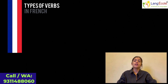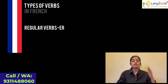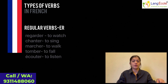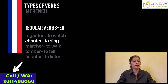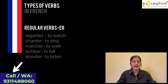Let's now have a look at the first group. The first group includes regular verbs that end with -er in their infinitive form. The infinitive form means to watch, to dance, etc. This group includes most verbs. Here are a few examples of ER verbs: regarder – to watch, chanter – to sing, marcher – to walk, tomber – to fall, écouter – to listen. All these are ER regular verbs, so they will follow the same pattern of conjugation.